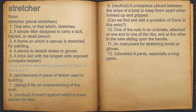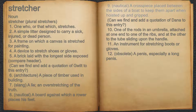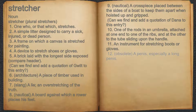Six: architecture — a piece of timber used in building. Seven: slang — a lie and overstretching of the truth. Eight: nautical — a board against which an oarsman places his feet. Nine: nautical — a crosspiece placed between the sides of a boat to keep them apart when hoisted up. Example: can we find and add a quotation of Dana to this entry? Ten: one of the rods in an umbrella, attached at one end to one of the ribs and at the other to the tube sliding upon the handle. Eleven: an instrument for stretching boots or gloves. Twelve: obsolete — a penis, especially a long penis.